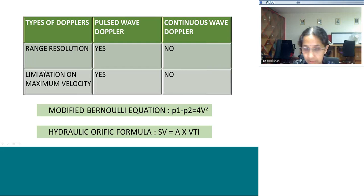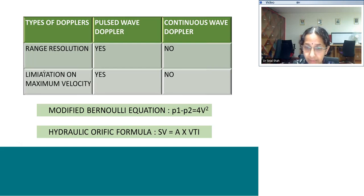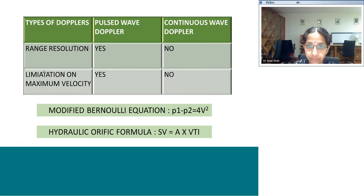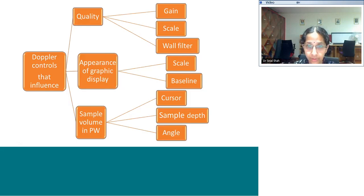With continuous wave Doppler you can pick up velocities as high as 4 to 5 meters per second. There are two basic principles we are going to use: one is the modified Bernoulli's equation and second is the hydraulic orifice formula. These two equations help us understand hemodynamics and calculate cardiac output. There are also Doppler controls — gain, scale, and wall filter — that affect the quality of the Doppler study.